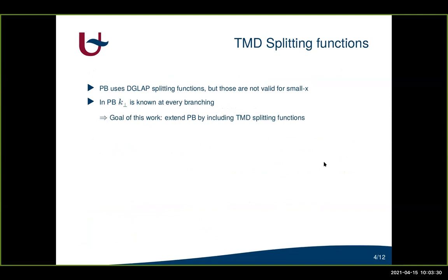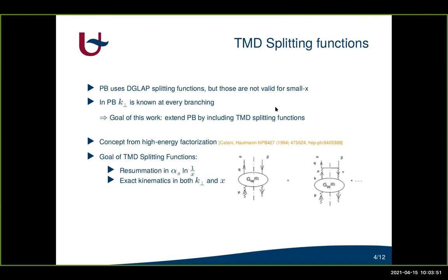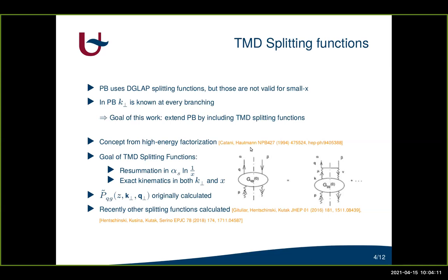Currently the parton branching method uses DGLAP splitting functions, but for small x those DGLAP splitting functions are not valid. Moreover, we know the transverse momentum in every branching. So the goal of this work is to extend the parton branching method by including TMD splitting functions. These TMD splitting functions are a concept from high energy factorization and have as their goal a resummation in small x and exact kinematical treatment in both transverse and longitudinal momentum. Originally only the gluon-to-quark TMD splitting function was calculated, depending on the splitting variable z but also on the transverse momentum of the incoming and outgoing parton, but recently the three remaining splitting functions have also been calculated.